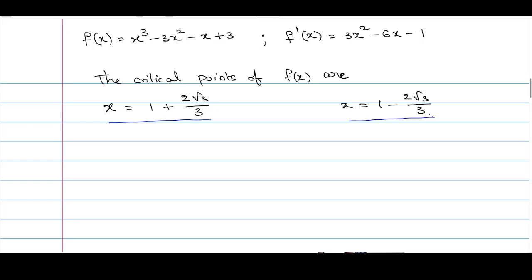Now we find f''(x) and check its sign at these two critical points to classify them as local minima or local maxima. f'(x) = 3x² - 6x - 1, so differentiating with respect to x gives f''(x) = 6x - 6.